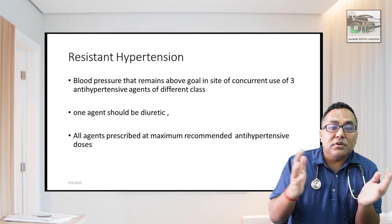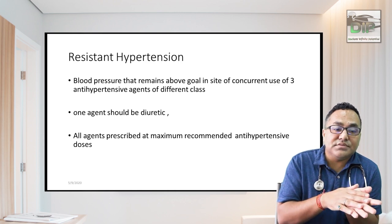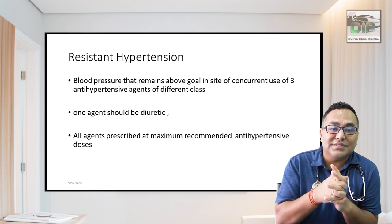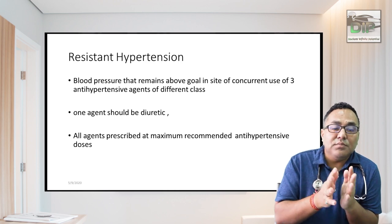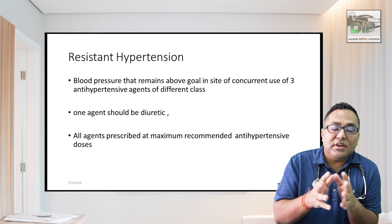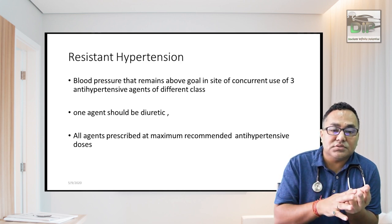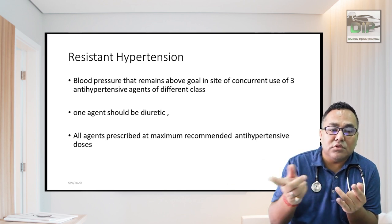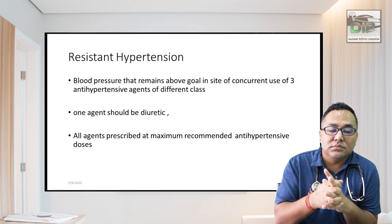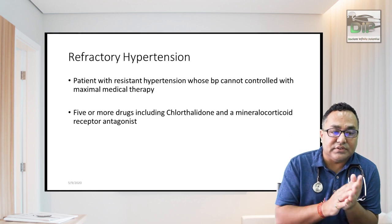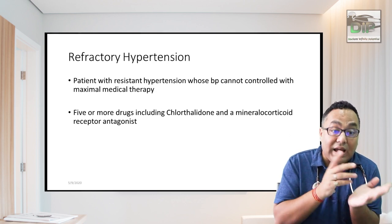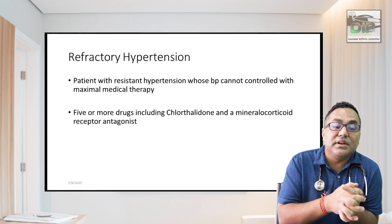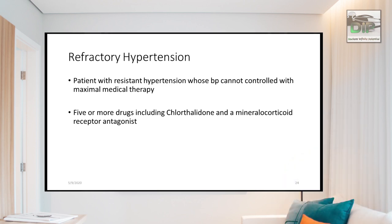After understanding classification, types, and causes of secondary hypertension, another important entity is resistant hypertension. When giving three drugs — such as an ARB, calcium channel blocker, and a diuretic (one agent should always be a diuretic) — and the patient's target BP is still not maintained, label the patient as having resistant hypertension. Refractory hypertension is when BP cannot be controlled with maximum medical therapy, meaning five or more drugs including clonidine and a mineralocorticoid receptor antagonist.